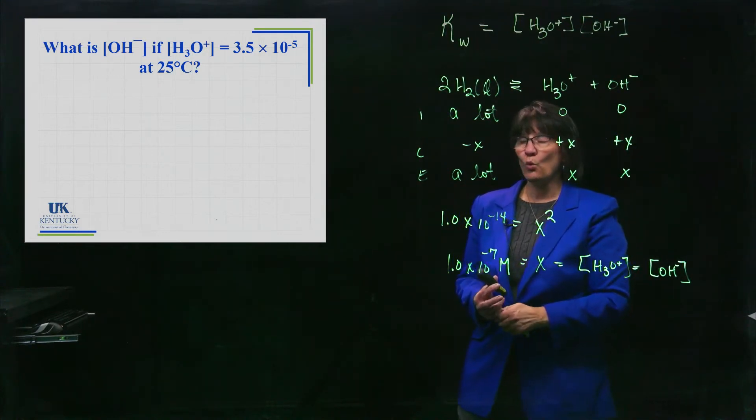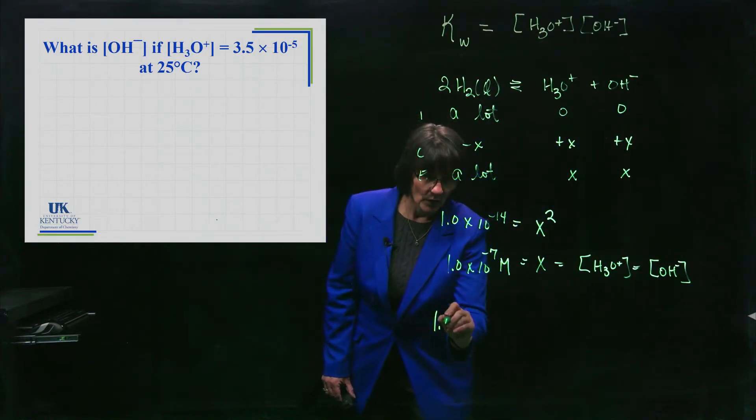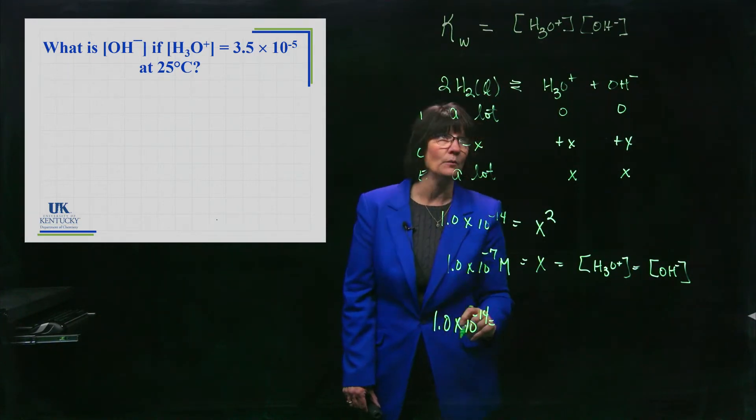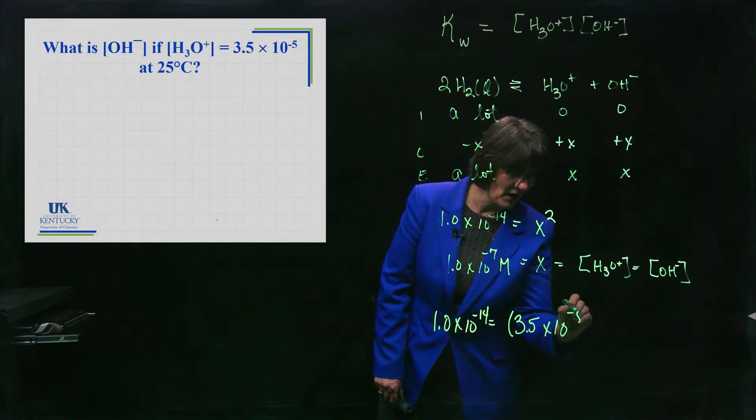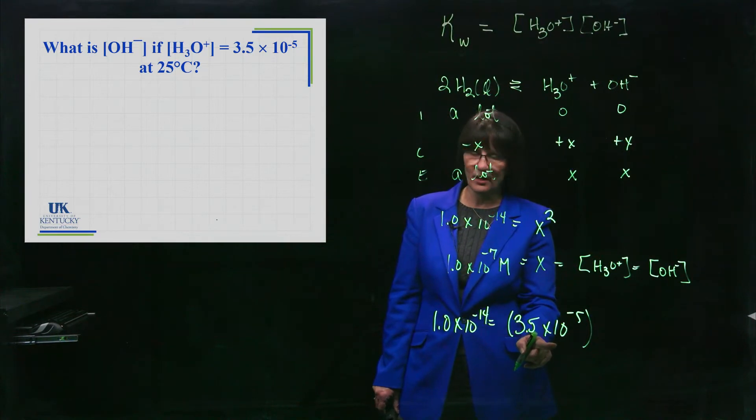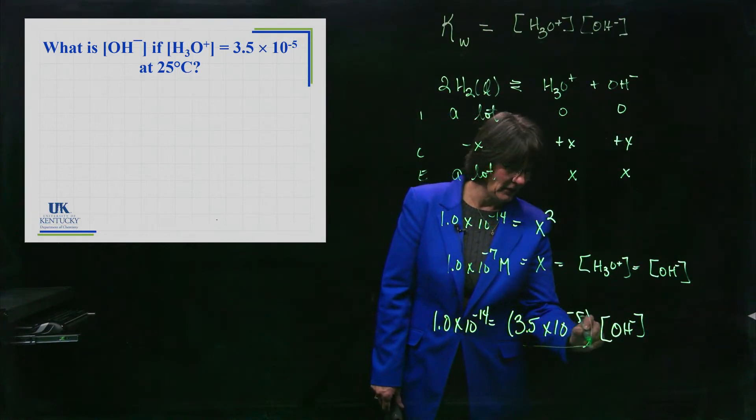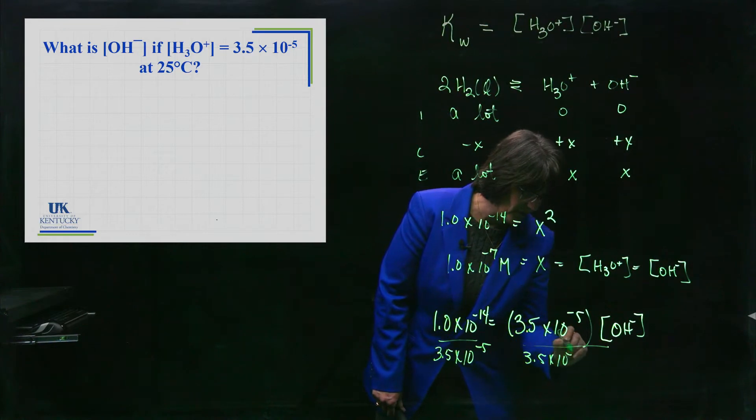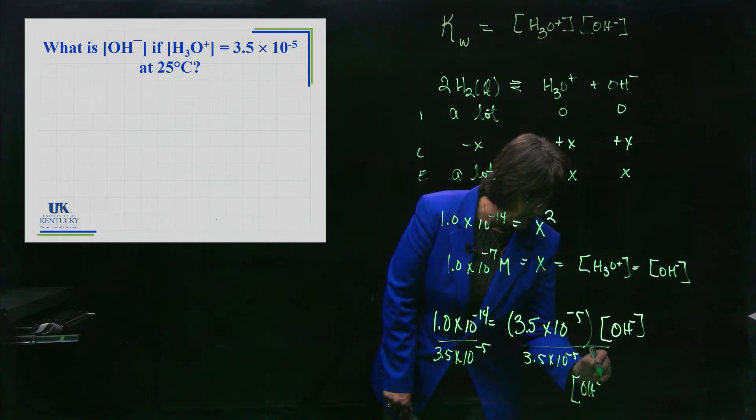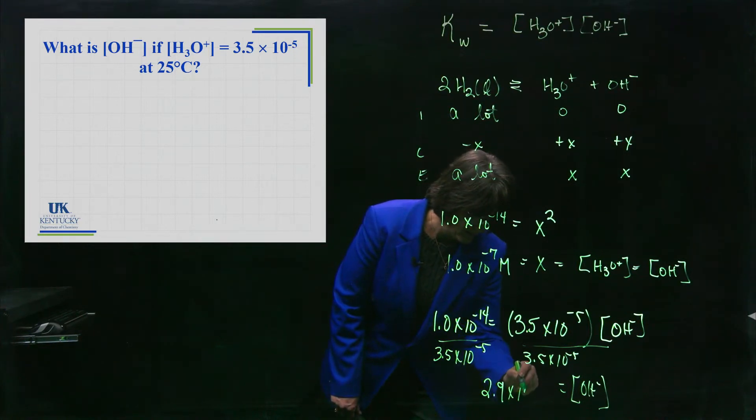And therefore the OH minus has to drop because the product must be a constant. So if we're given a problem in which we know one of those two values, I'm going to go back up here to this thing. 1.0 times 10 to the minus 14 is the KW. The H3O plus concentration was given to me as 3.5 times 10 to the minus 5. Now is that more acid? Is it more H plus? I'll call it H3O plus. Then what it is in pure water, yeah that's a bigger number, times the OH minus concentration. So if I want the OH minus concentration, all I need to do is divide both sides by the 3.5 times 10 to the minus 5. And that will leave me with my OH minus concentration, and in this case OH minus is equal to 2.9 times 10 to the minus 10.